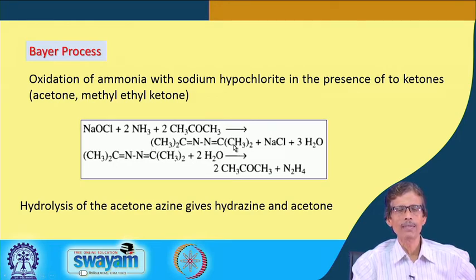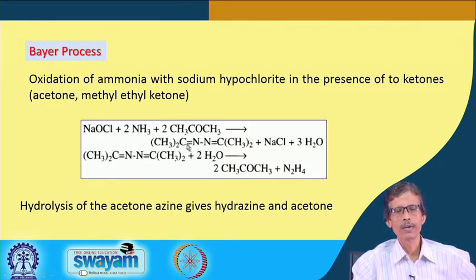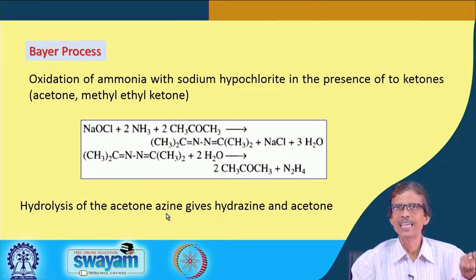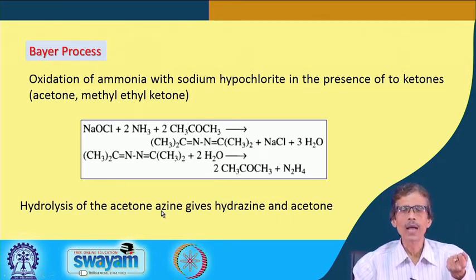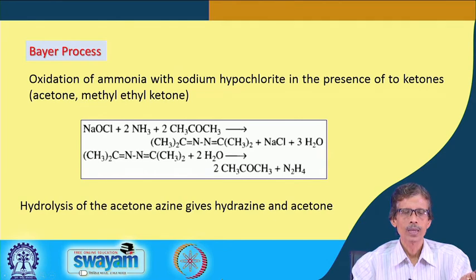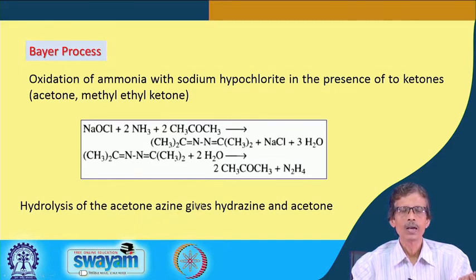Acetone from the left and acetone from the right react with the produced hydrazine (bonded by N-N), forming an azine — a C=N on the left and another C=N on the right — which we call the acetone azine or di-azine of acetone, along with NaCl and water. In the second step, hydrolysis of the acetone di-azine gives hydrazine and acetone back.